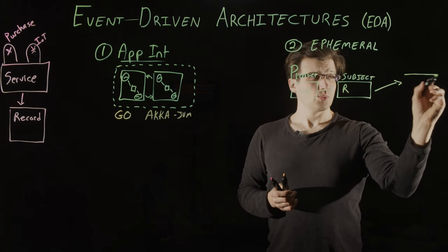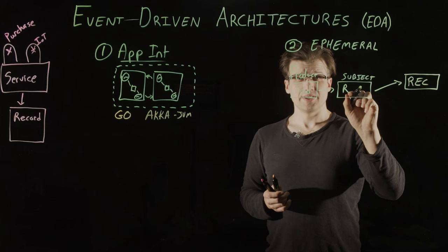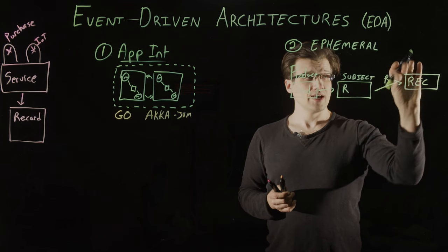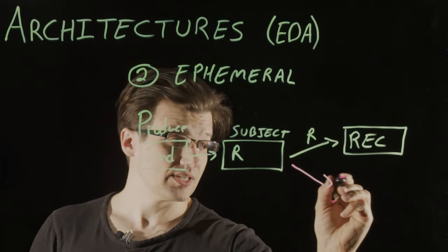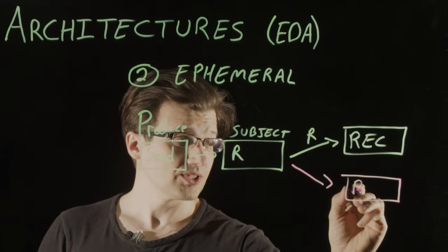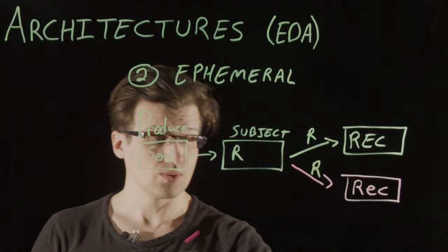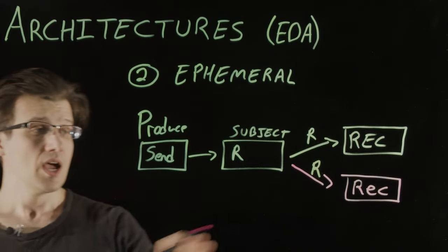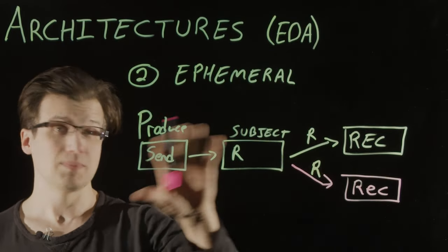Then, a receiver that's registered on the subject receives that record and can process it. Now, you could have a second receiver as well. And this receiver would also get a copy of this record that's published to the subject. But only if it's online at the time that it's been sent.